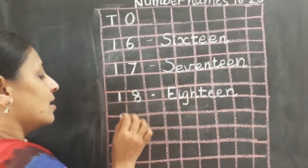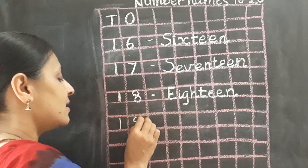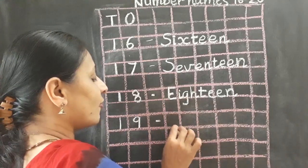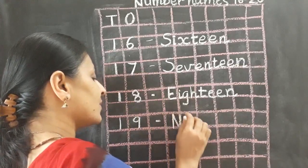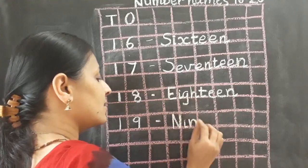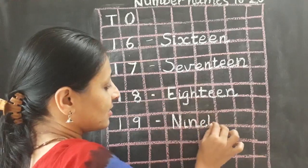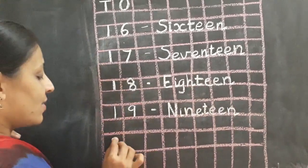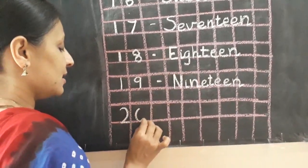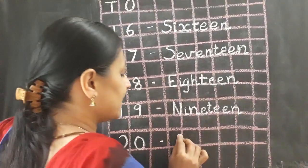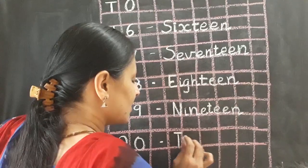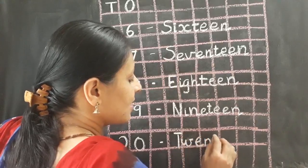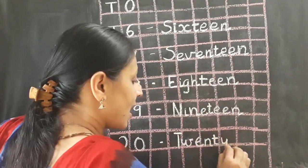Now we will leave one box and I will write 19. The number name of 19 is N, I, N, E, T, E, E, N. Nineteen. Now I will write 20. The number name of 20 is T, W, E, N, T, Y. Twenty.